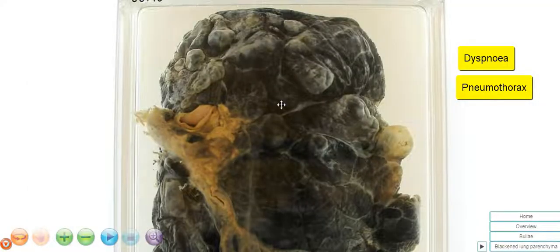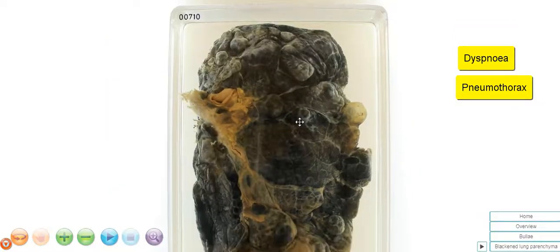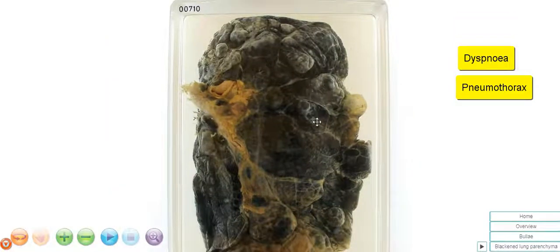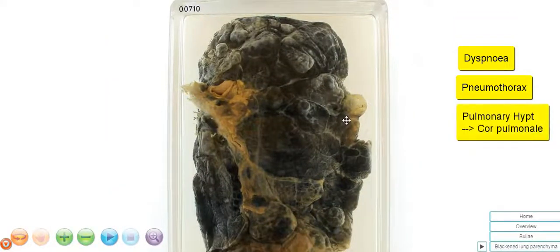In the long term, because of the chronic damage to the lung parenchymal structure, there may also be pulmonary hypertension affecting the lung vasculature and this may result in cor pulmonale or right heart failure.